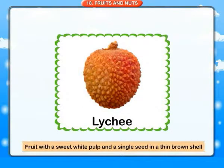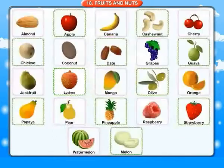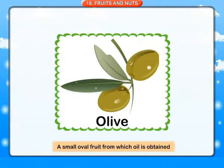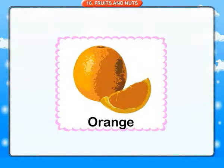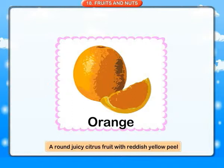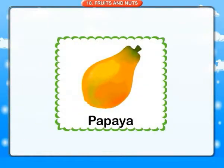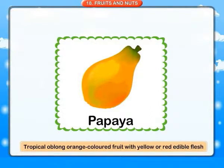Lychee: a fruit with a sweet white pulp and a single seed in a thin brown shell. Mango: a yellowish-red pear-shaped tropical fruit with juicy pulp and hard central stone. Olive: a small oval fruit from which oil is obtained. Orange: a round juicy citrus fruit with reddish yellow peel. Papaya: a tropical oblong orange-colored fruit with yellow or red edible flesh.